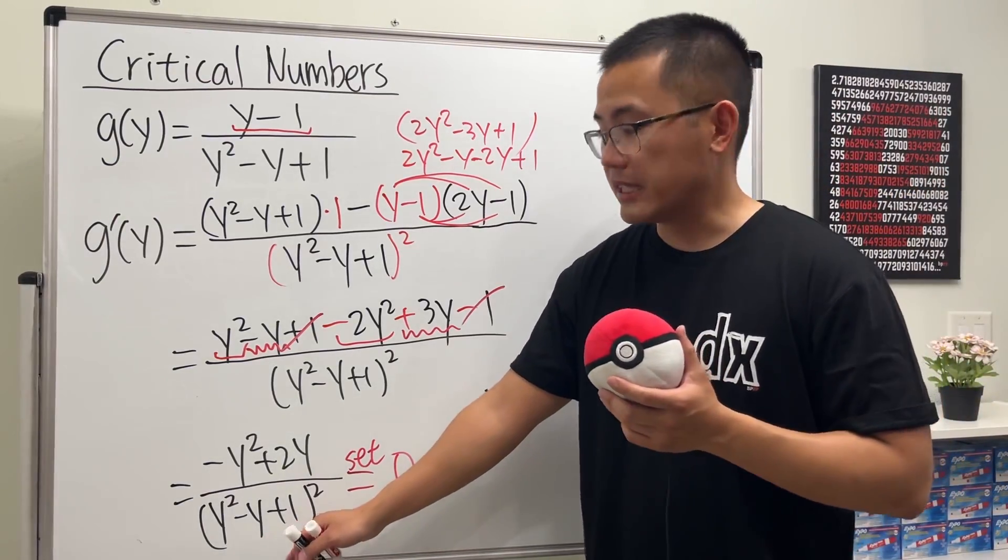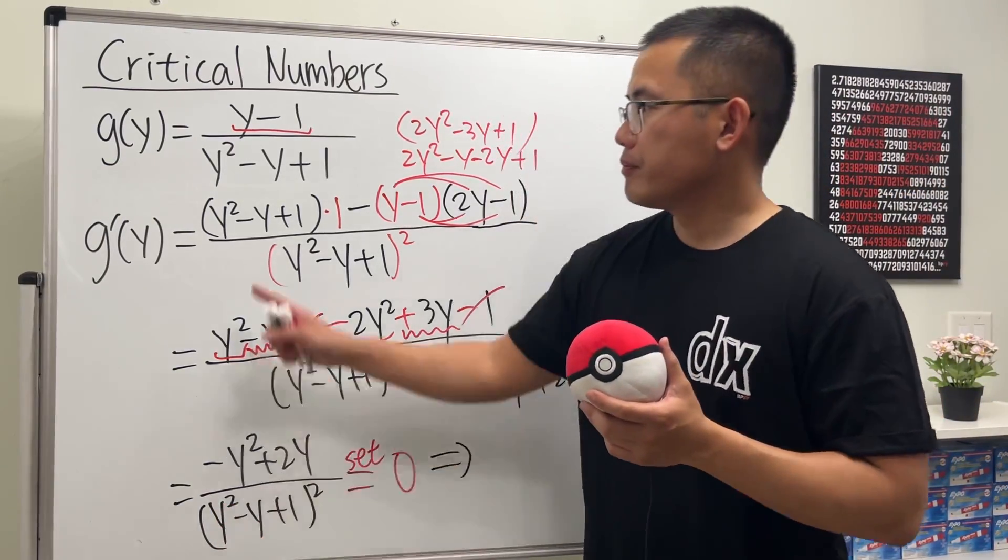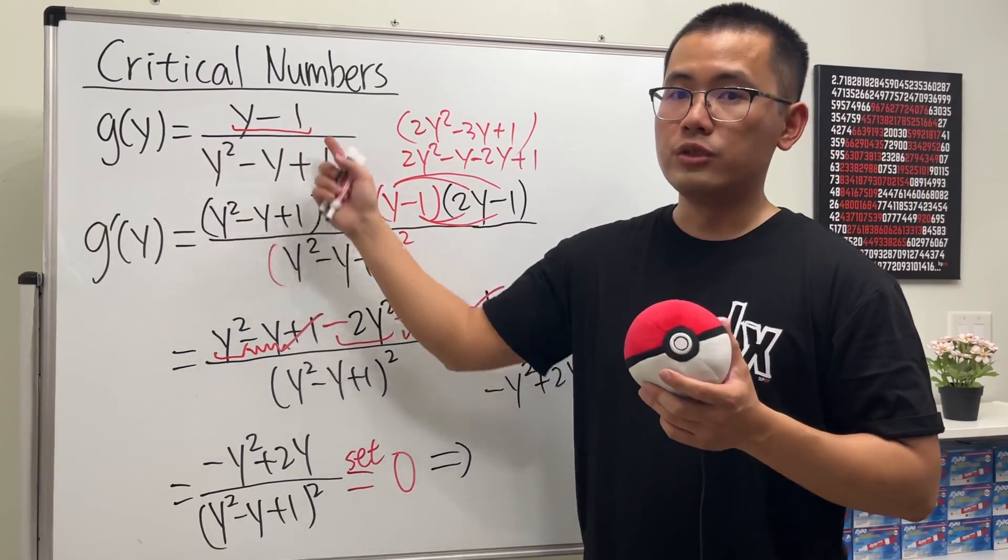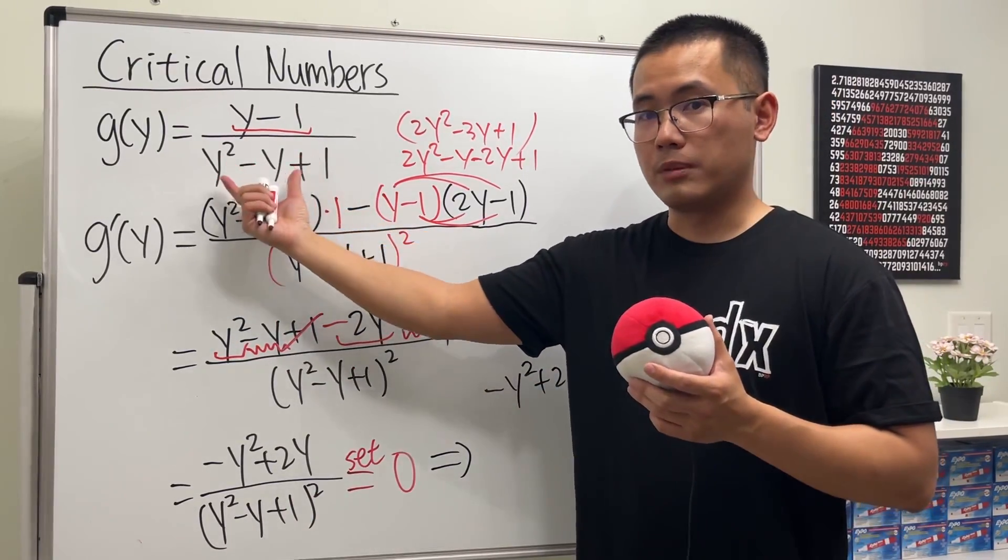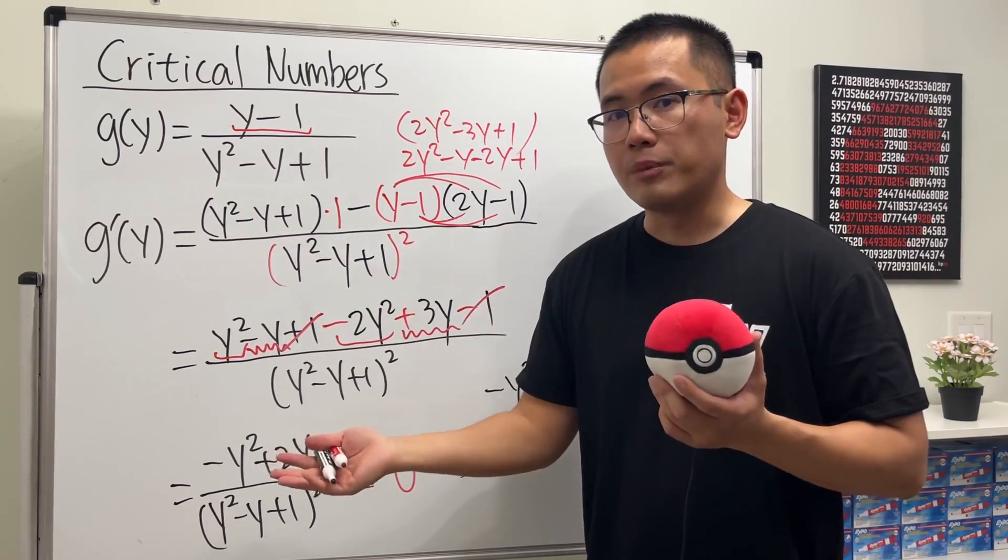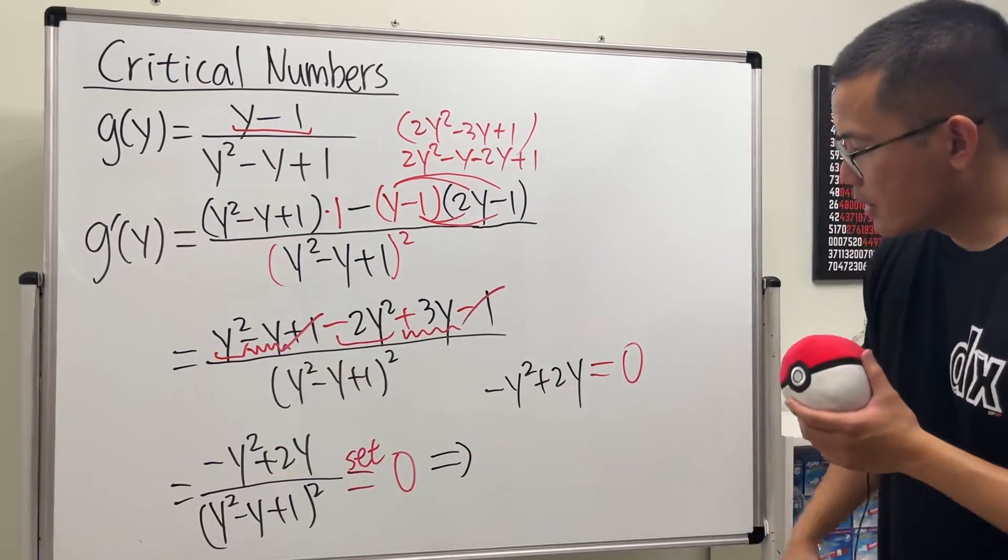Don't worry about the bottom. Because again, this bottom appears in the original already. If this is 0, that means the original will also be 0 on the bottom. That means it's not even on our domain. So don't worry about that.